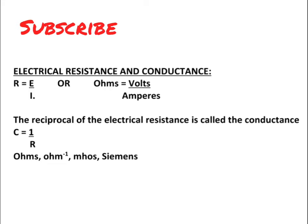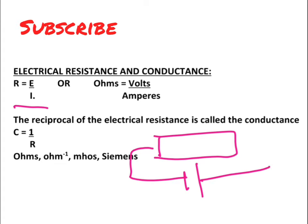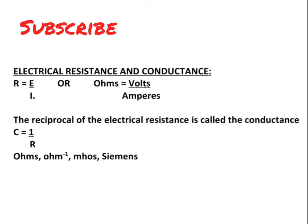What is Ohm's law? Ohm's law can be stated as R is equal to E upon I. That means if you consider a conductor and apply certain voltage to its ends, and a current is flowing through it, then the resistance of the conductor is given by this formula, whereby voltage is given as E and current as I, measured in amperes. So we can write: ohms equals volts per amperes, since voltage is in volts, current in amperes, and resistance in ohms.